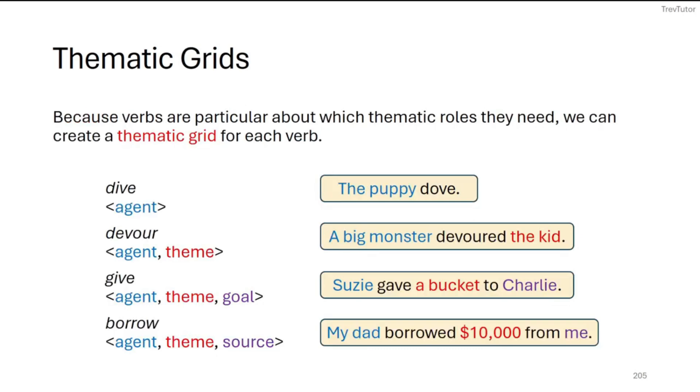So when we have a verb in a particular context, we can create what's called a thematic grid. And what this does is this lists the thematic roles in order from left to right that you see them in a sentence. So for example, in dive, we can need an agent, so the puppy dove is an example. For the case of devour, we need an agent and a theme. We need a subject and object. We see the agent first, which is a big monster, then the verb devoured, and then the kid is a theme.